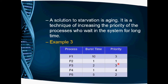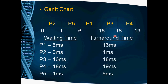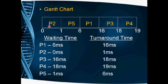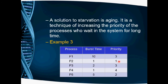P2 is the highest priority process, so P2 is executed first. P2 starts at time 0. P2's burst time is 1 millisecond, so P2 executes from 0 up to 1 millisecond. Now the next highest priority is P5, which has a burst time of 5 milliseconds.